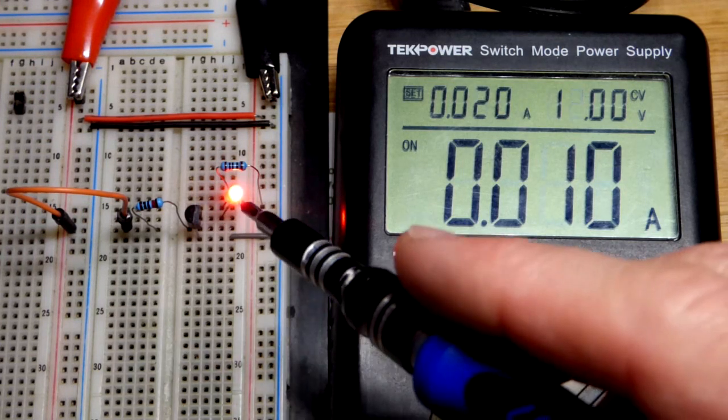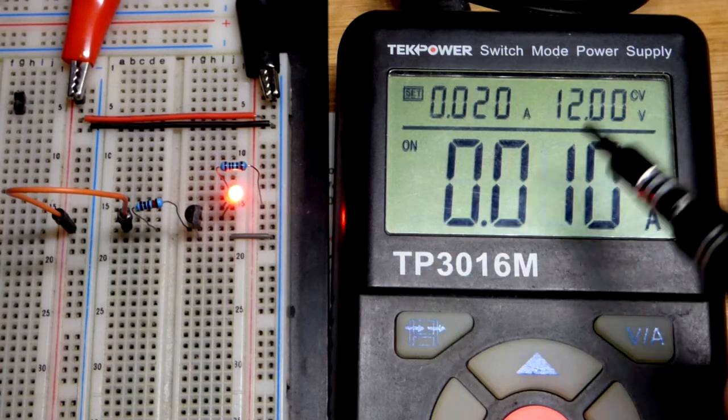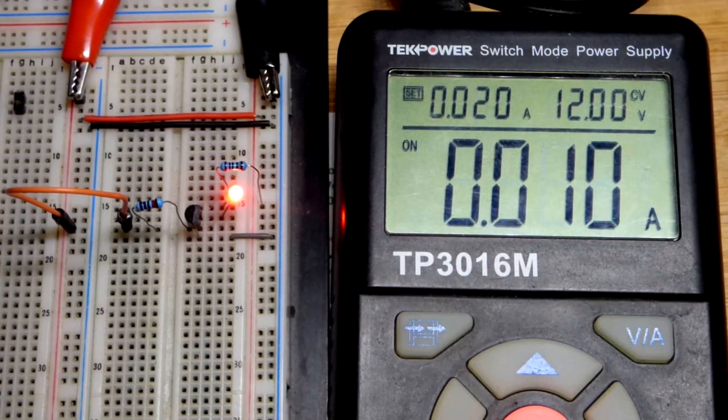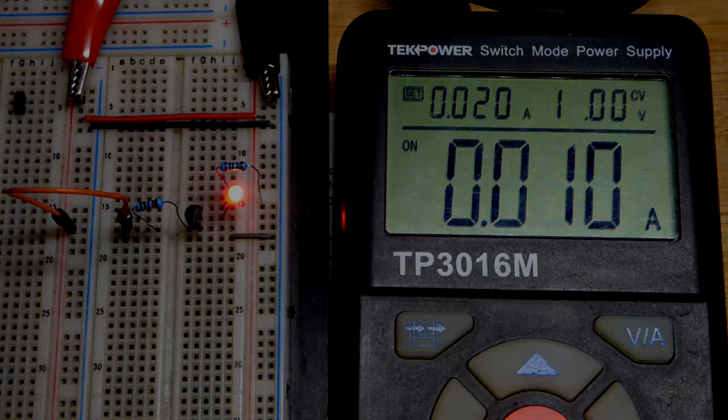So the LED is dropping about 2 volts, leaving about 10 volts across the resistor out of that 12. And we got 10 milliamps, which we expect. So now it is working properly.